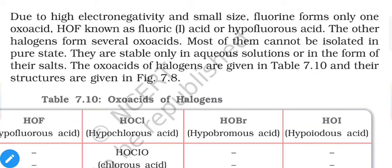The other halogens form several oxo acids, but most of them cannot be isolated in pure state — they are stable only in aqueous solution or in the form of their salts. The oxo acids of halogens are listed in Table 7.10, and their structures are shown in Figure 7.8.